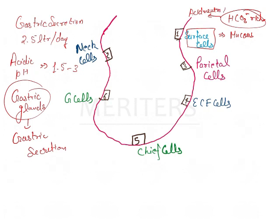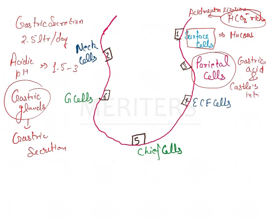Because the pH is acidic here, near the mucosa, neutralization is required so that the lower cells are not injured at such a low pH. Then we have the parietal cells, which produce gastric acid (HCl) and also the intrinsic factor.